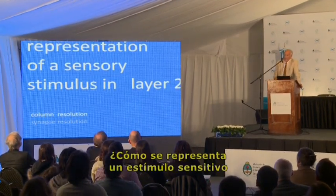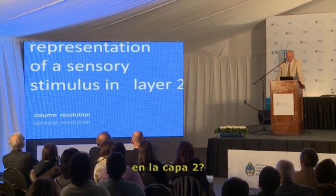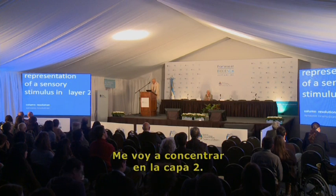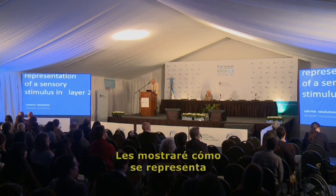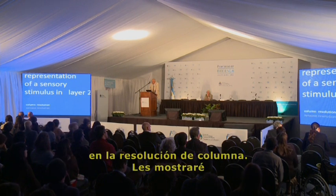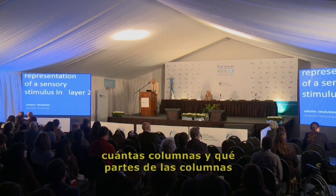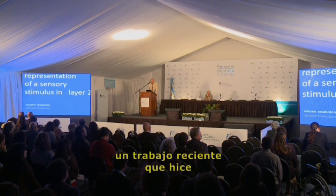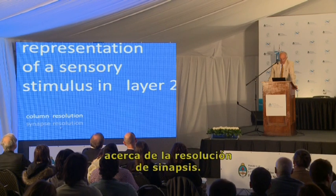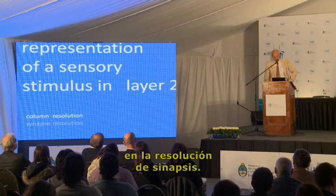How is a sensory stimulus represented in layer 2? I'm going to concentrate on layer 2 and show how it is represented at columnar resolution — that is, how many columns and which parts of columns are involved. In the second part, I'll show you recent work that I did with Arthur Conard on synaptic resolution, so we can look at the representation of a stimulus at synapse resolution.